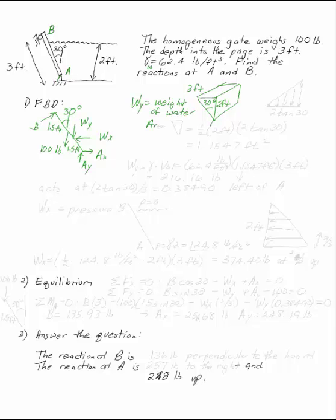The area of this triangle is one half base times height, one half 2 feet times that length right there is going to be 2 tan 30. That gives you 1.1547 feet squared.